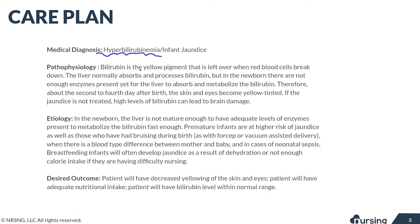Bilirubin is the yellow pigment that is left over when red blood cells break down. Normally this byproduct, this bilirubin, is going to be absorbed and processed in the liver. But newborns sometimes lack or don't have enough of the enzyme that's needed to help metabolize that bilirubin.